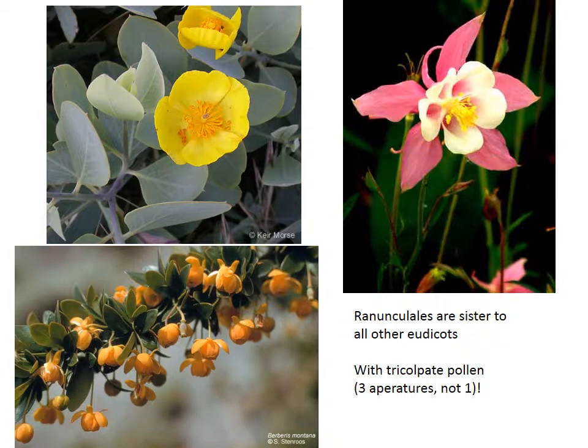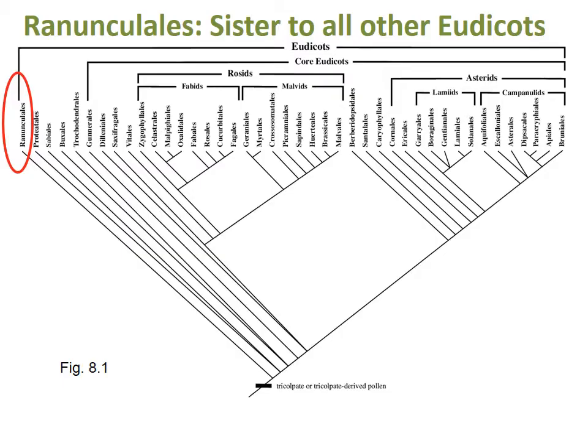With that, I'll jump right into the first group, which are the Ranunculales — the order that is sister to all other eudicots. Here's a cladogram from your textbook showing all the different orders of the eudicots, and you can see the Ranunculales there on the left as sister to all the rest. Before looking at the diversity of this clade and how to identify members of the Ranunculales, I want to give you a brief orientation to some of the main clades of the eudicots.